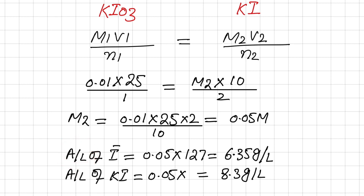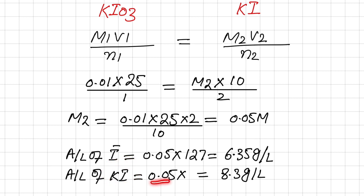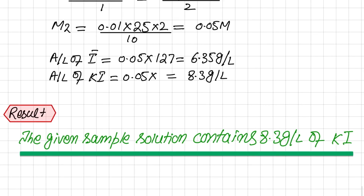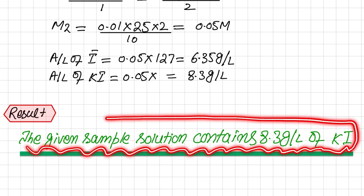Since the question asks for the amount per liter, multiplying the molarity (0.05 M) by the atomic mass of iodide gives 6.35 g/L of iodide. To find the amount per liter of overall potassium iodide, we multiply the molarity by the formula weight of KI, which is approximately 166 g/mol: 166 × 0.05 = 8.3 g/L. The final result is that the given sample solution contains 8.3 g/L of potassium iodide.